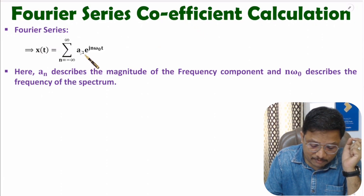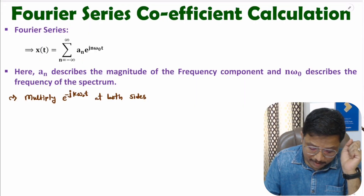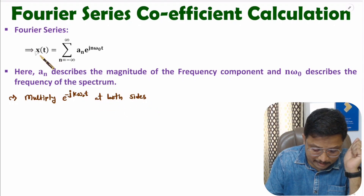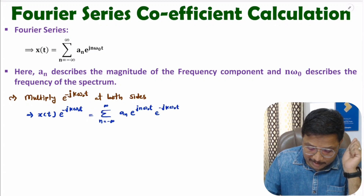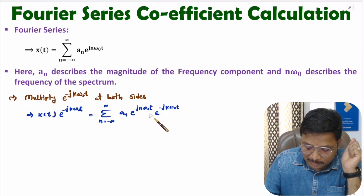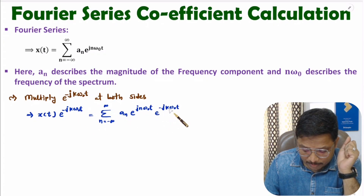To derive the equation of a(n), first of all, let us multiply e to the power minus jk omega naught t on both sides. So on this side and on this side, I will multiply e to the power minus jk omega naught t.